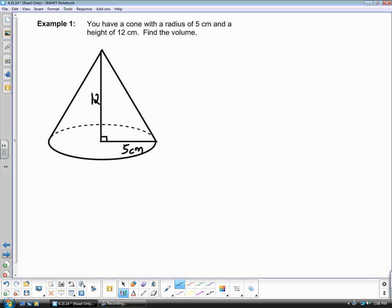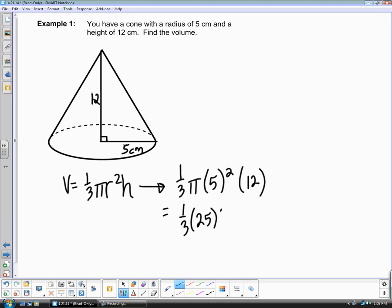Now we have everything that we need. One-third pi r-squared times your height is your formula. So let's plug in our radius and let's plug in our height. We have one-third pi 5-squared times 12. When you multiply all this through, you're going to have one-third times 25 times 12 times pi.